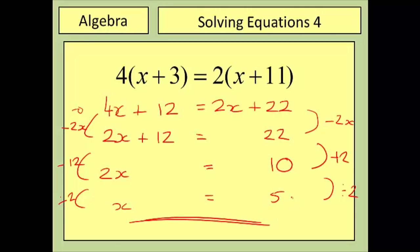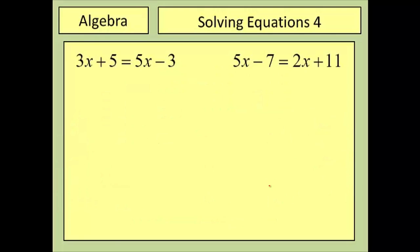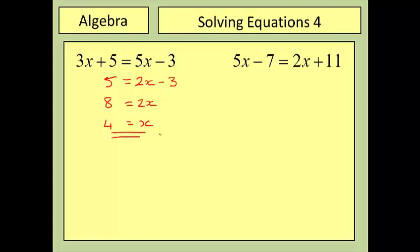Here are two questions to have a go at yourself — pause the video and hit play when you're ready for the answers. Let's look at the first one: 3x plus 5 equals 5x minus 3. Subtract 3x from both sides giving 5 equals 2x minus 3, then add 3 to both sides giving 8 equals 2x, then divide both sides by 2 — answer: x equals 4.